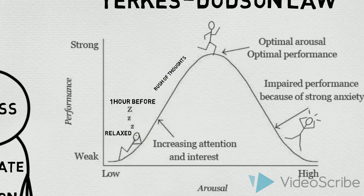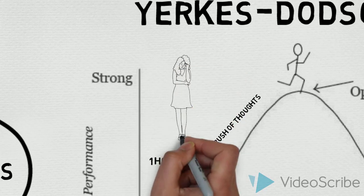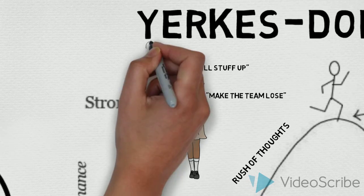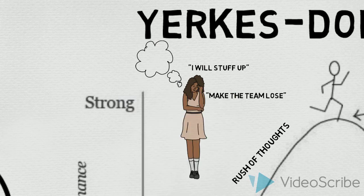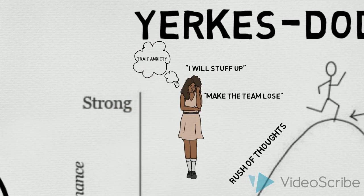Ten minutes before, however, Paula began to experience a rush of negative thoughts concerning her fear of letting the team down. These psychological cognitions can be attributed to Paula's trait anxiety, as she would think about how losing would disappoint everyone instead of focusing on the task she was about to commence.